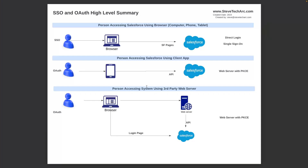Let's look at this diagram and consider a few scenarios. On the left, if there is a person — a human using a browser — and their intent is to go to Salesforce and bring up Salesforce pages, then they're going to be going through direct login. They either can do a direct login into Salesforce, or if they have a separate third-party identity provider, we could be doing single sign-on.